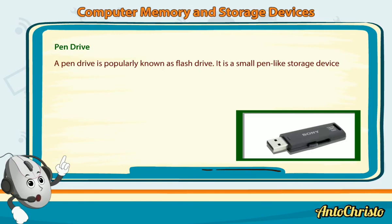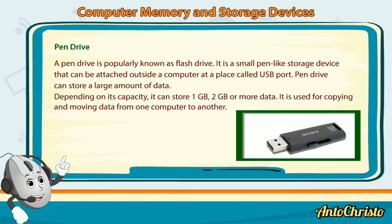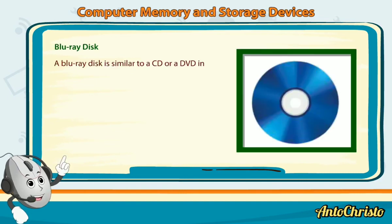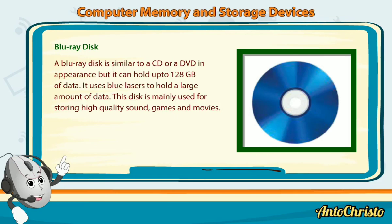Pen Drive: A pen drive, popularly known as a flash drive, is a small pen-like storage device that can be attached to a computer at a USB port. It can store a large amount of data — 1 GB, 2 GB or more — depending on its capacity. It is used for copying and moving data from one computer to another. Blu-ray Disc: A Blu-ray disc is similar to a CD or DVD in appearance but can hold up to 128 GB of data. It is mainly used for storing high-quality sound, games and movies.